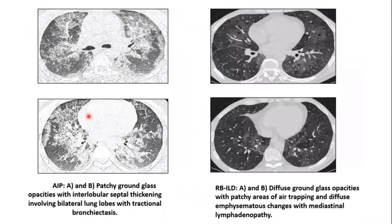The second case is acute interstitial pneumonia. In acute interstitial pneumonia, it is a fulminant form that usually causes diffuse alveolar damage, typically in a previously healthy individual. The classical CT findings will be patchy bilateral ground glass opacity with consolidation, which is predominant in the posterior segments of the lung. There can be architectural distortion, traction bronchiectasis, or honeycombing as the disease progresses. In this case of AIP, we can see patchy ground glass opacity with interlobular septal thickening involving bilateral lung lobes with traction bronchiectasis.